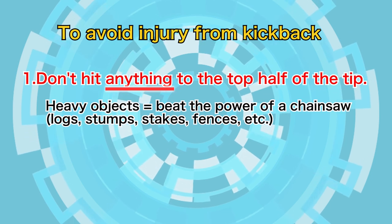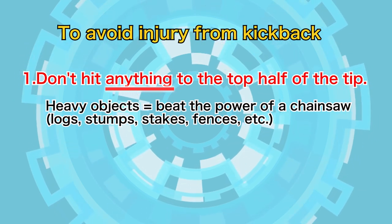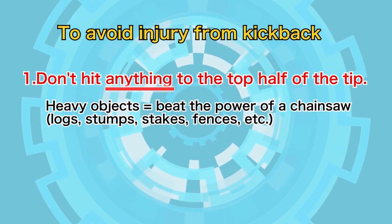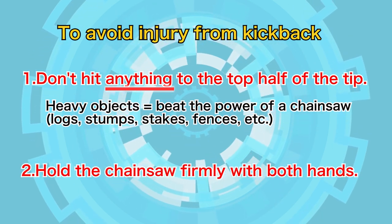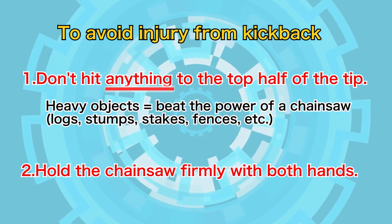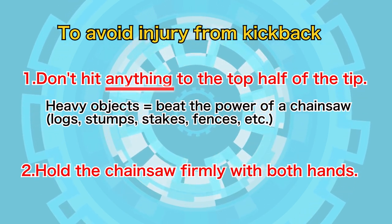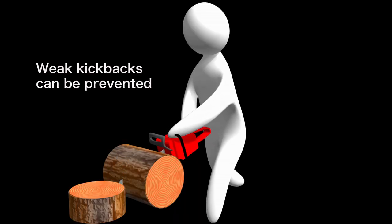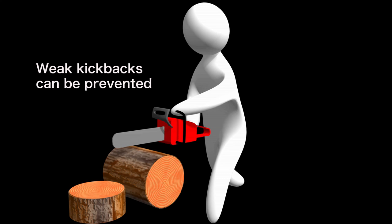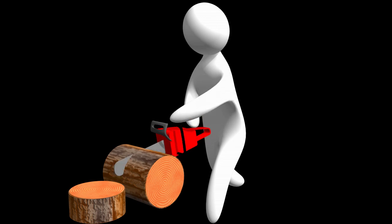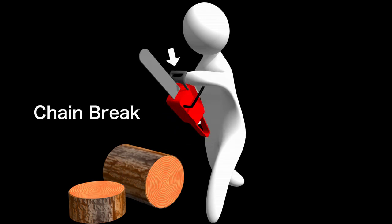No matter how careful you are, kickbacks can happen unexpectedly. Hold the chainsaw firmly with both hands — it seems obvious but it's very important. Weak kickbacks can be prevented that way. In case of a strong kickback, the chain brake is applied with the back of the left hand, and it won't become a major accident.